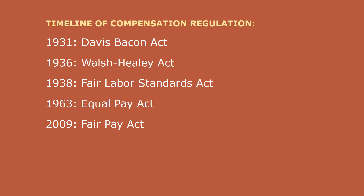Since 1931, five major pieces of legislation have shaped the fabric of how employees are paid, including: in 1931, the Davis-Bacon Act; in 1936, the Walsh-Hartley Act; in 1938, the Fair Labor Standards Act; in 1963, the Equal Pay Act; and in 2009, the Lilly Ledbetter Fair Pay Act.